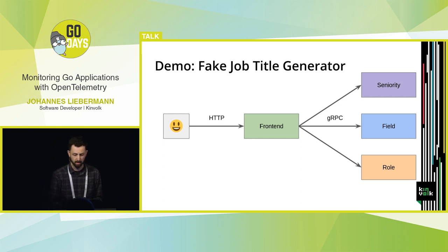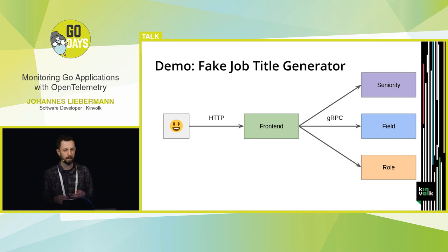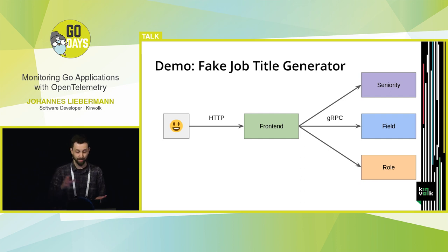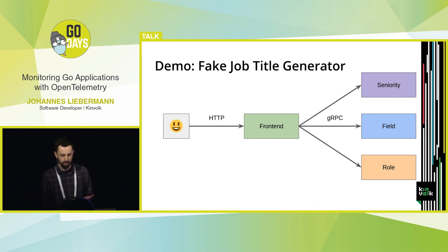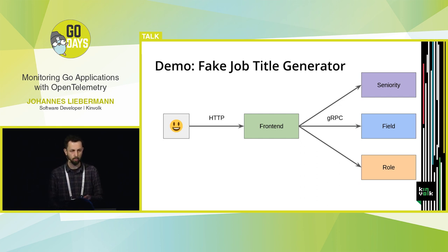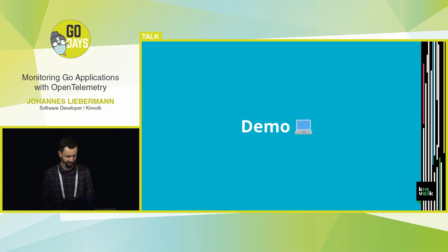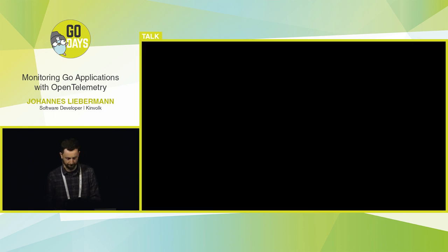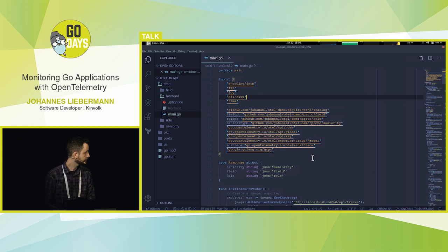Time for a demo. I'll demo a completely useless application — I really like fake job titles. So I wrote an application that generates random ones for you. We have a front-end service which handles HTTP requests from clients. The front-end service talks to three back-end services over gRPC, and each back-end service generates a piece of the title. Here are our services — there's a front-end service. Let's look at its implementation.